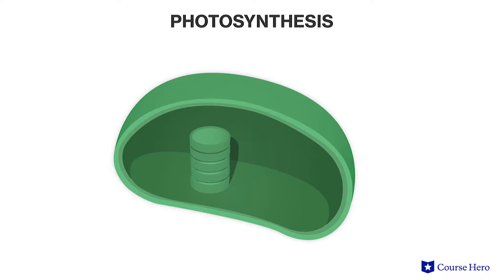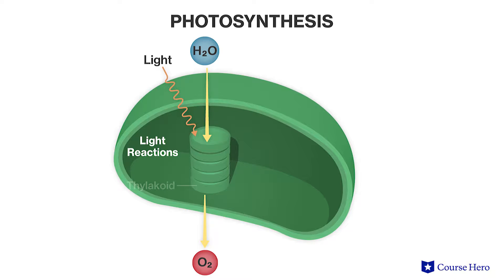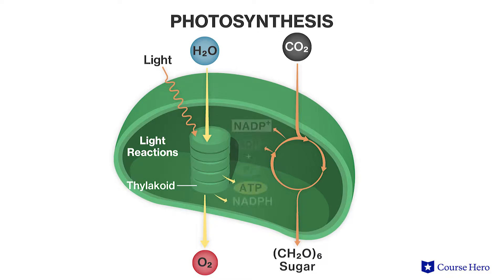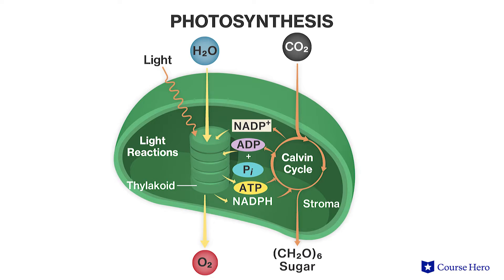Photosynthesis consists of two stages: the light-dependent reactions, which take place in the thylakoids, and the light-independent reactions, known as the Calvin cycle, which takes place in the stroma.